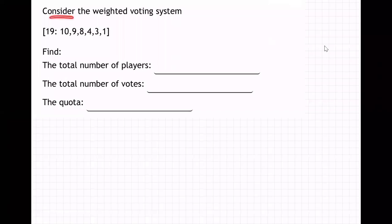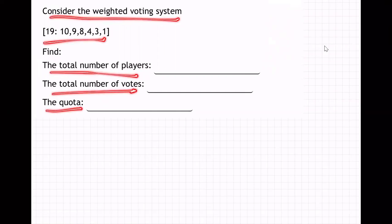Okay, so on this problem, it says here's a weighted voting system, gives us these numbers, wants us to find the total number of players, the total number of votes, and the quota.